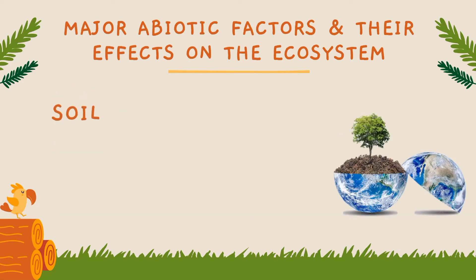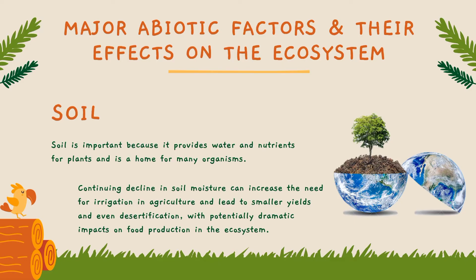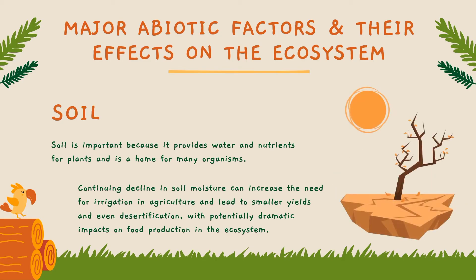Next, we have soil. Soil is made up of bits of rocks, water, air, minerals, and the remains of once-living organisms. The structure and chemical makeup of soil and rock in an area affect the types of plants that grow there. Soil provides water and nutrients for plants and is home for many organisms. The decline in soil moisture can increase the need for irrigation in agriculture, lead to smaller yields and even desertification, with potentially dramatic impacts on food production in the ecosystem.